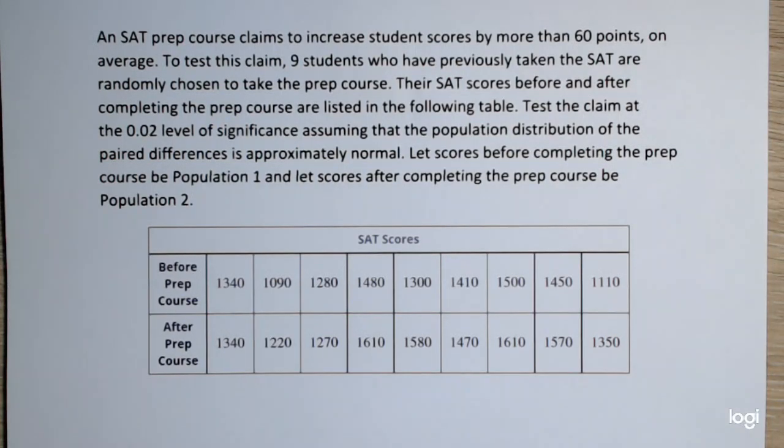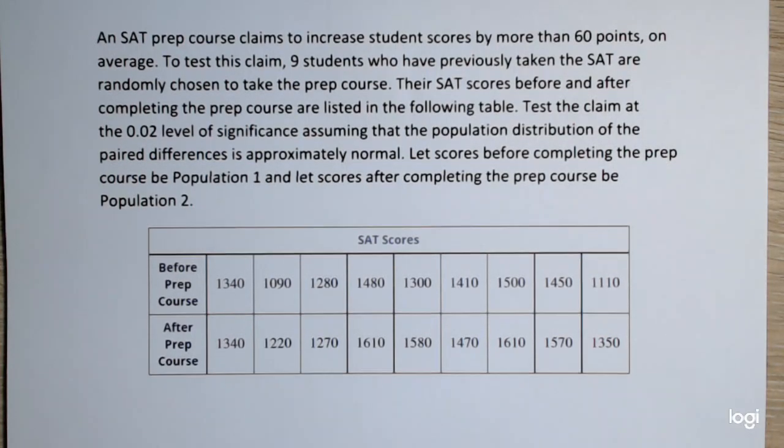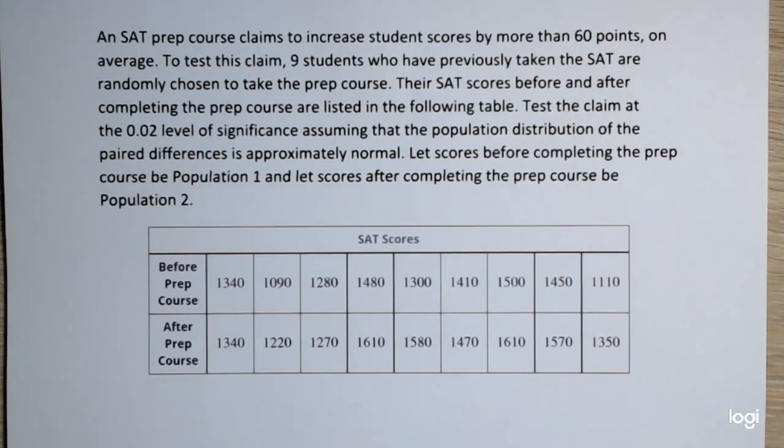Their SAT scores before and after completing the prep course are listed in the following table. Test the claim at the 0.02 level of significance assuming that the population distribution of the paired differences is approximately normal. For the paired t-test, to get this in the TI-84 calculator, I'm going to have to reduce this to a single sample t-test using subtraction as there is no dedicated paired t-test built into this calculator.